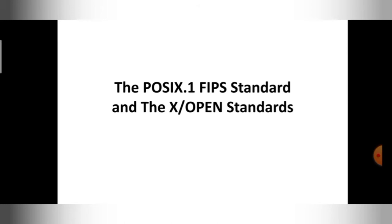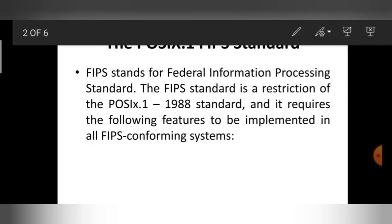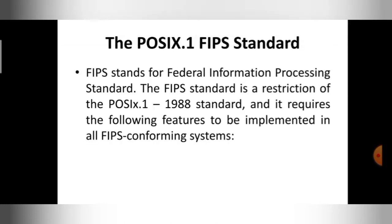Let me begin the explanation of these two different standards. The first one is the POSIX.1 FIPS standard. FIPS stands for Federal Information Processing Standard. The FIPS standard is a restriction of POSIX.1. If you want to know more about the POSIX.1 standard, the link is in the description. This Federal Information Processing Standard is a restriction of POSIX.1, having some changes.